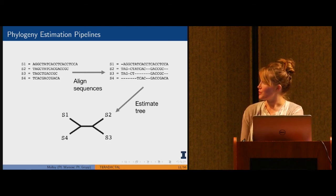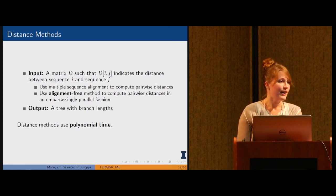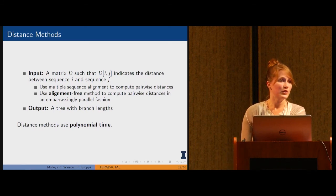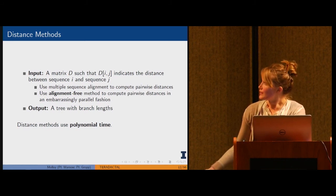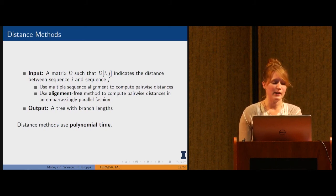There's a lot of different approaches to estimating a tree. One of them are distance methods where the input is a matrix and every element ij indicates the distance between sequence i and sequence j. There's other alignment free methods to computing these pairwise distances that are embarrassingly parallel. Distance methods will give you a tree with branch lengths, and it's important to note that these methods use polynomial time, so that is a very desirable property.